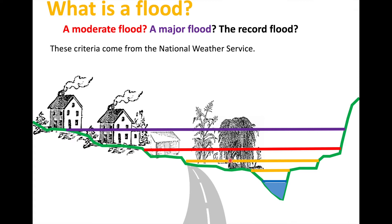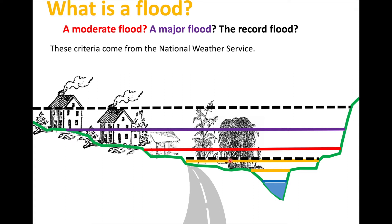So what then is a record flood? A record flood is the biggest flood in the historical record for an area. It might be a really major flood with lots of damage and destruction. Or maybe you're in an area where there isn't a long historical record of flooding — either formally through USGS streamflow records or informally through histories — and in that case, a relatively minor event could be the record flood.